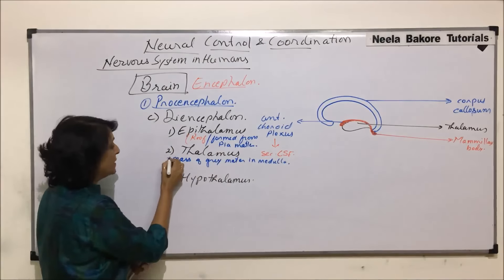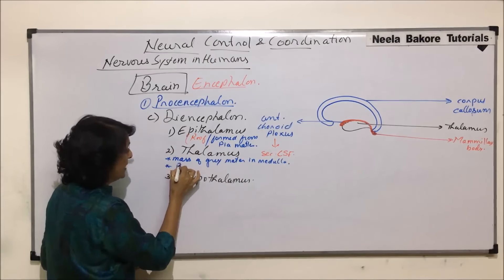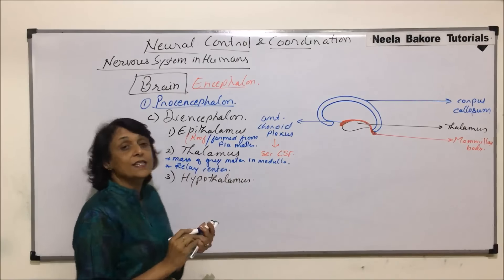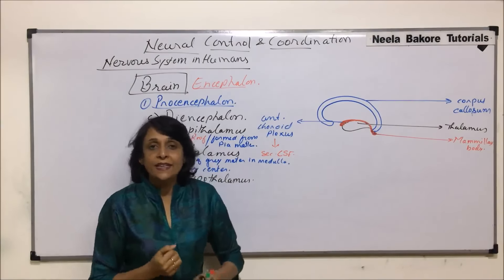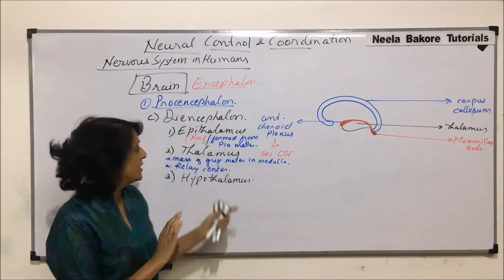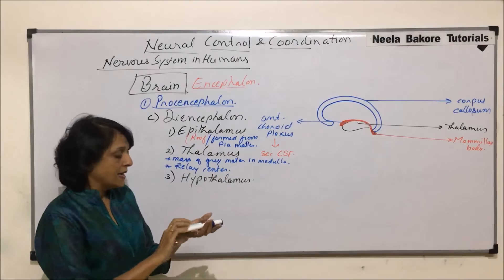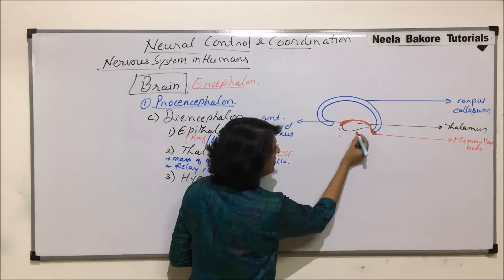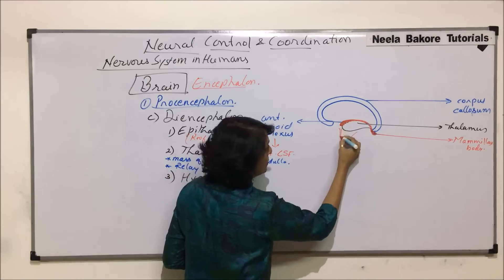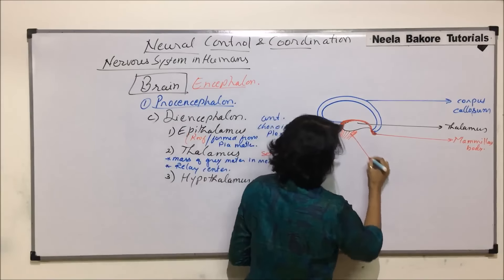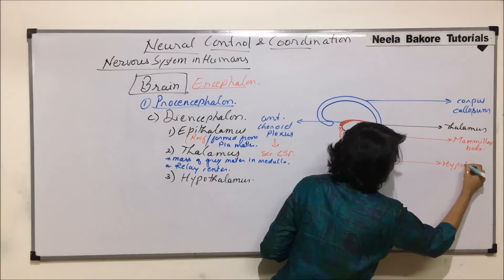Thalamus also acts as a relay center — it collects stimuli like pain and passes them on to the cerebral hemisphere. Below thalamus is present hypothalamus. This part shown here is the hypothalamus region, just below thalamus.